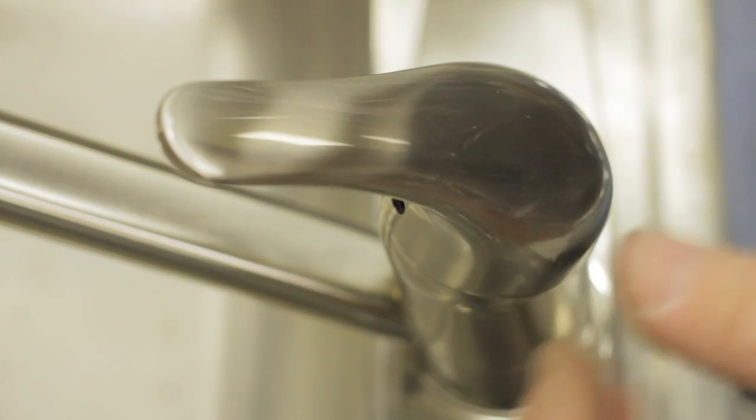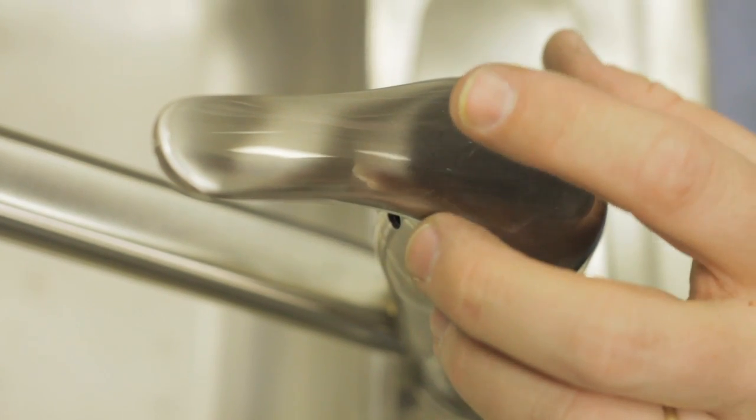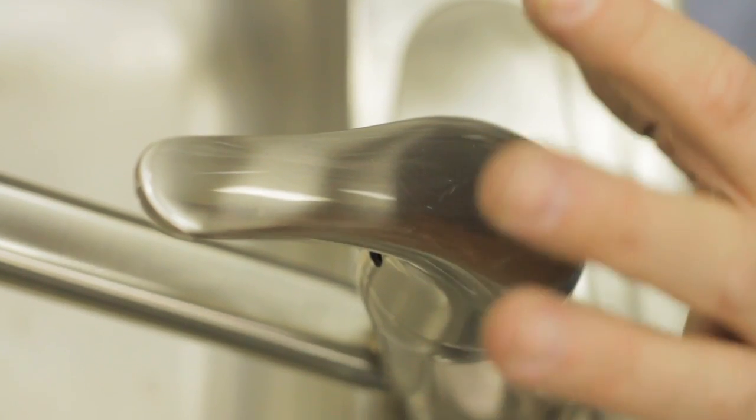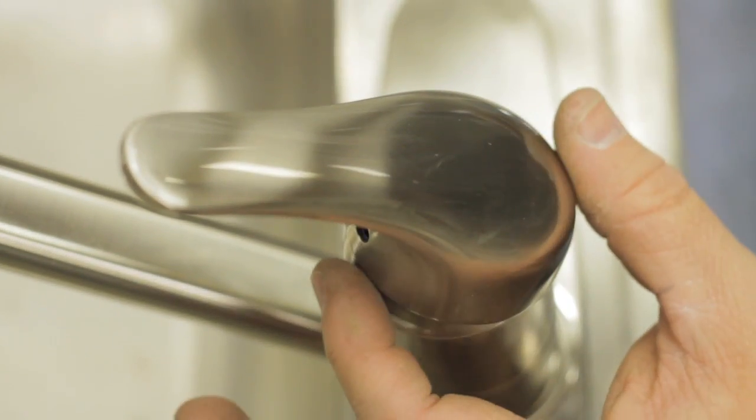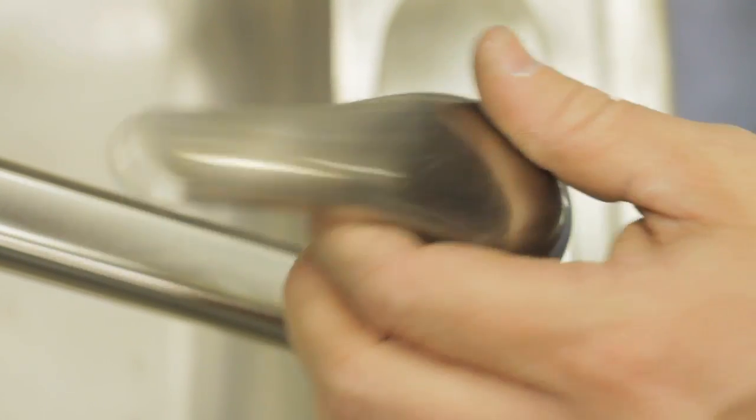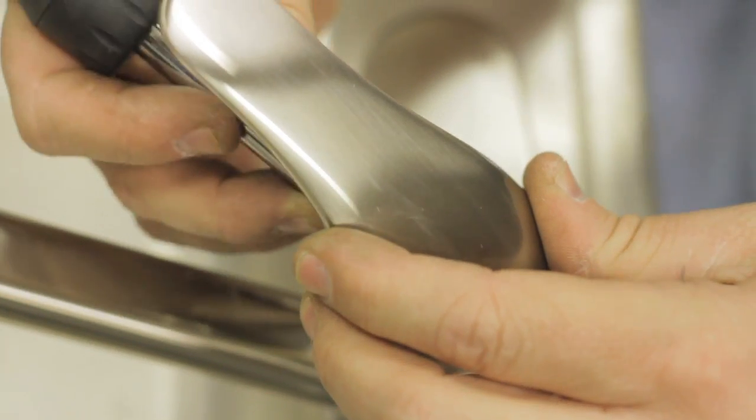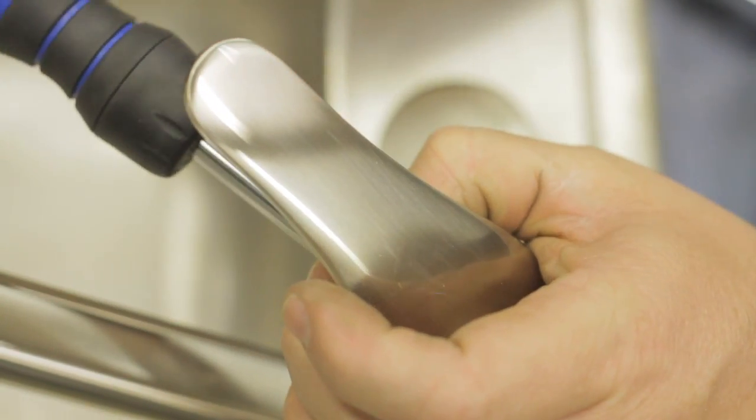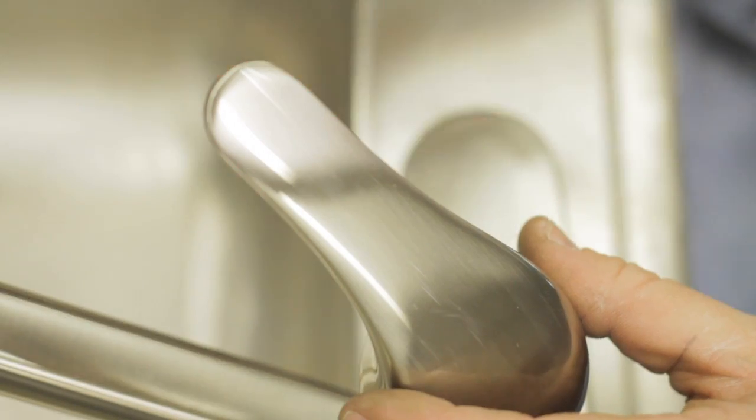Now when fixing a handle on a faucet, there's all kinds of different handles. This particular one is a single handle faucet that rotates. There's an Allen wrench right inside of here that you're going to loosen and this handle will pull right off.